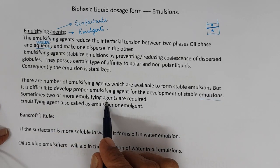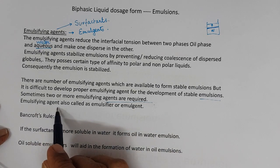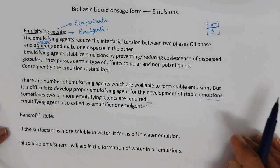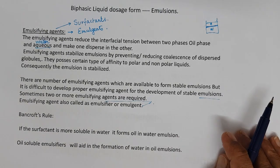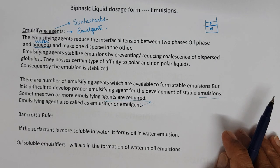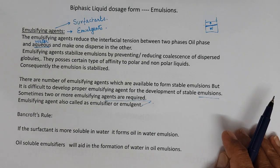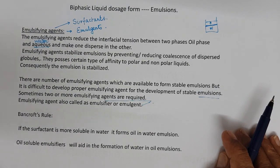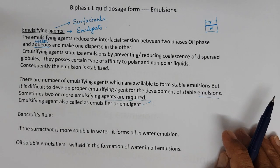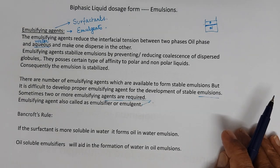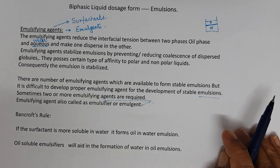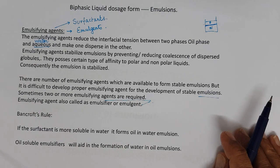Sometimes two or more emulsifying agents are required. Emulsifying agents are also called emulsifiers. For a more stable emulsion, emulsifiers are used in combination — two or three different emulsifiers are used. We will come to that when we discuss hydrophilic-lipophilic balance. The emulsifying agent reduces the interfacial tension between two immiscible liquids, oil and water, and makes one disperse in the other.